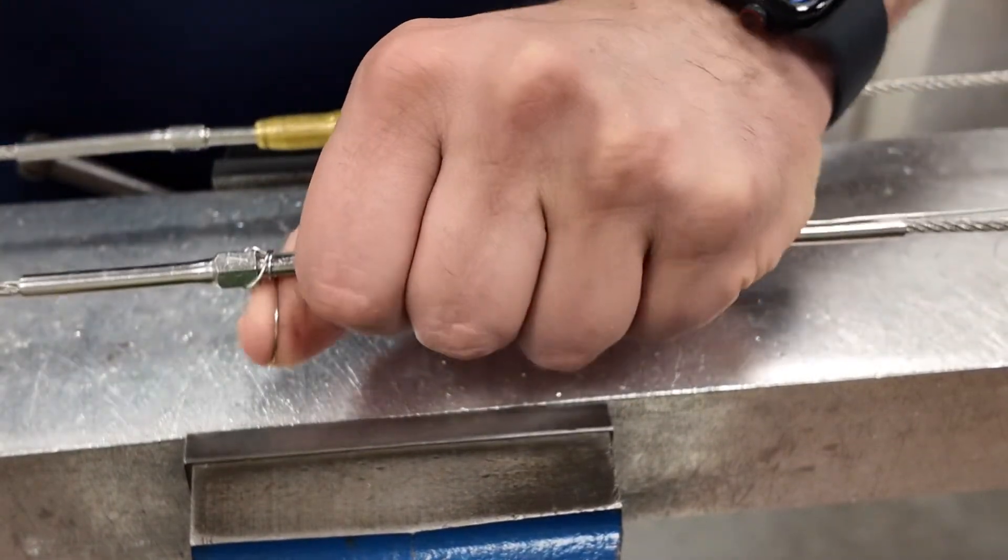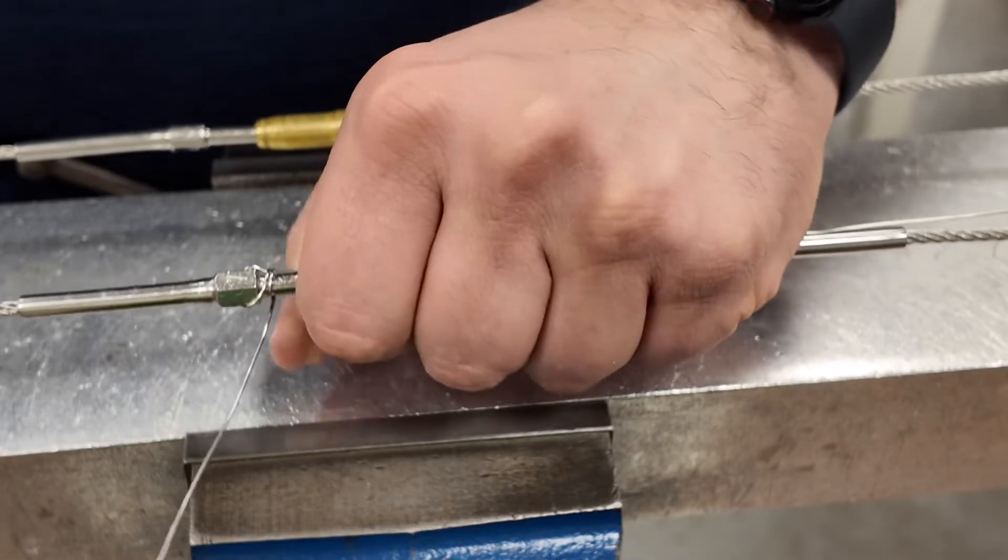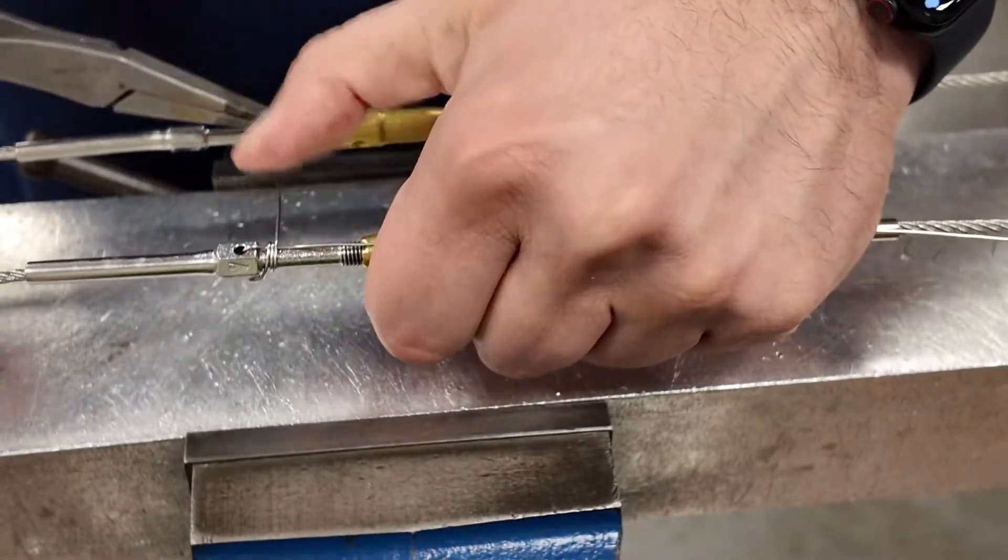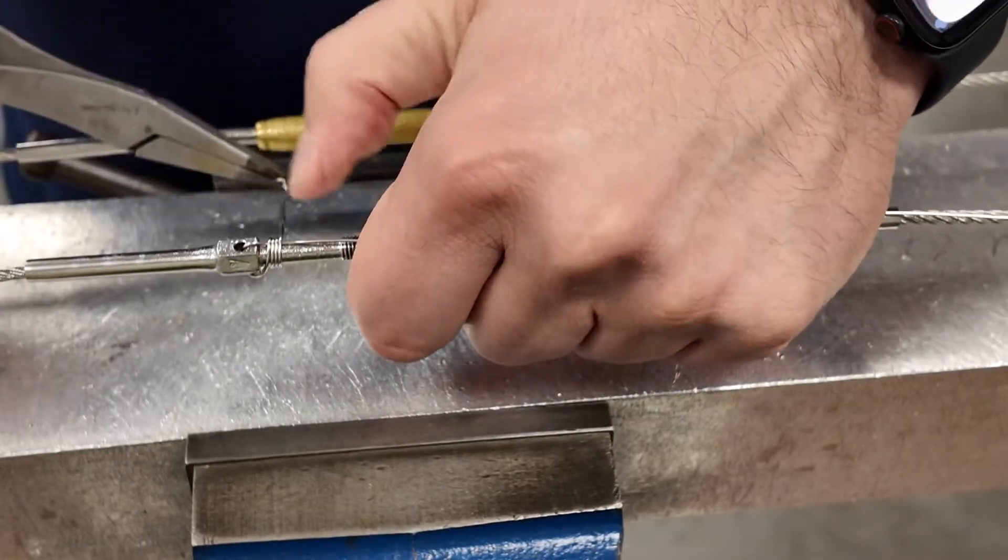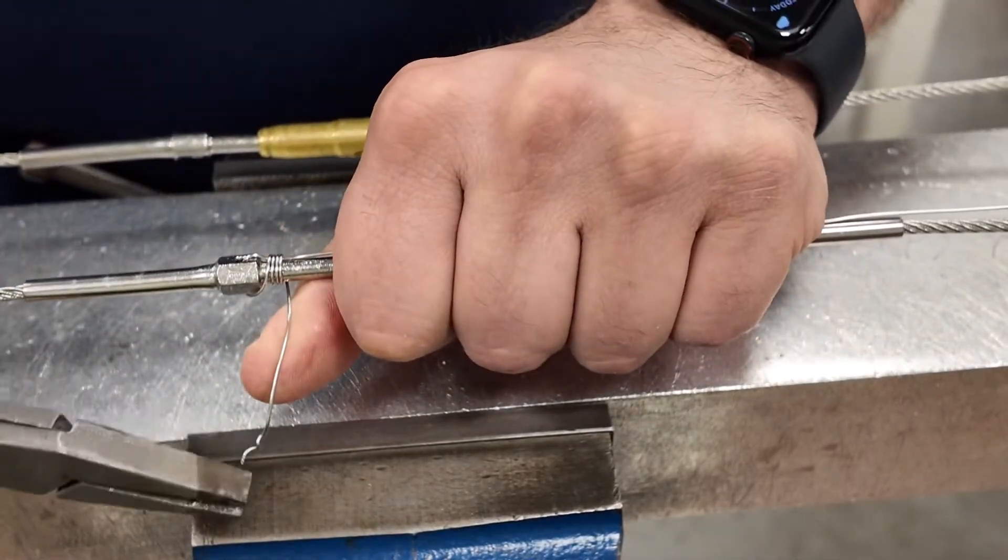And remember, AC 4313 states we must have a minimum of four wraps. More is okay, but four is the minimum. And I usually try and go for four or a maximum of five.